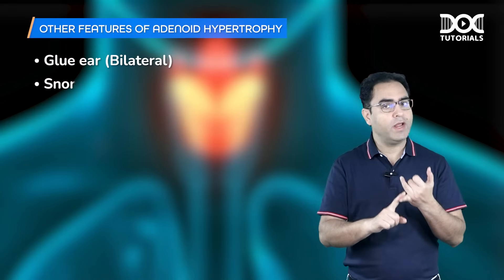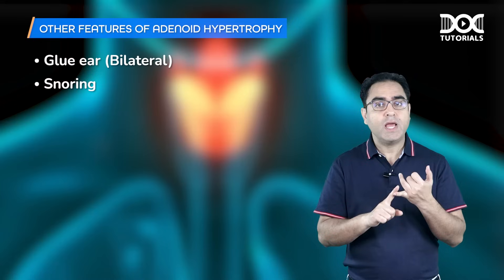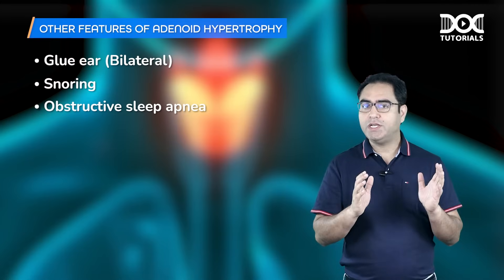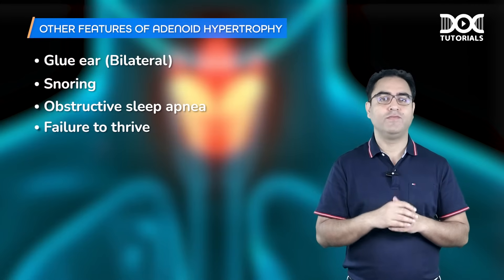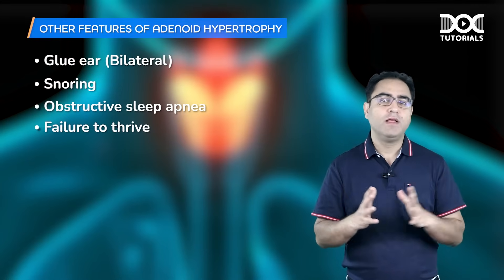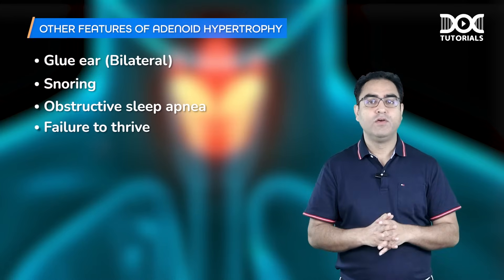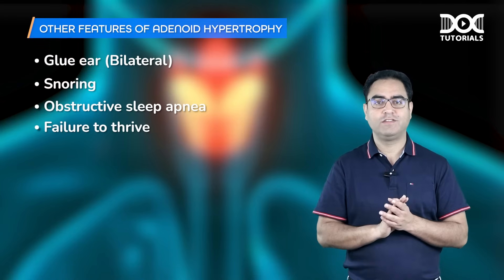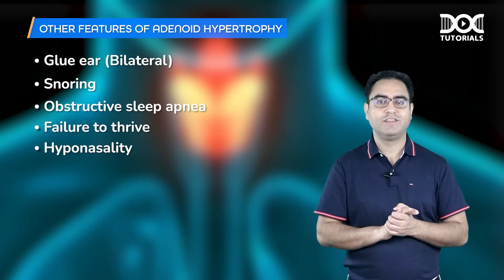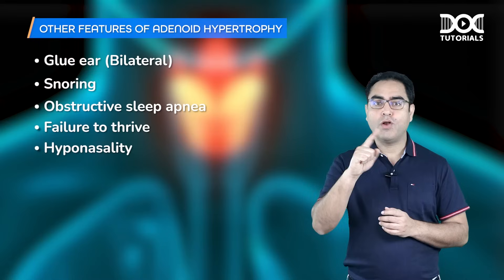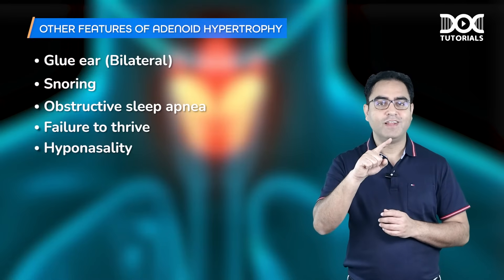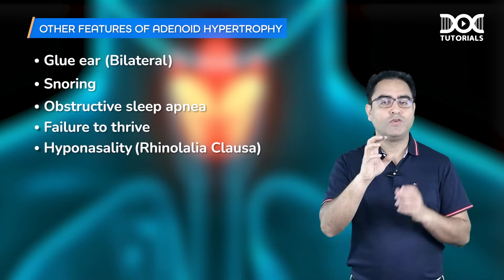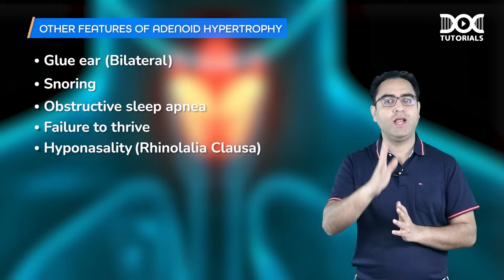The patient can have snoring, and rarely obstructive sleep apnea. The patient can have failure to thrive — the mother says the child is not gaining weight and height. The voice is dull — hyponasality — called rhinolalia clausa. The nose is closed from behind, so the type of voice in adenoid hypertrophy is rhinolalia clausa.